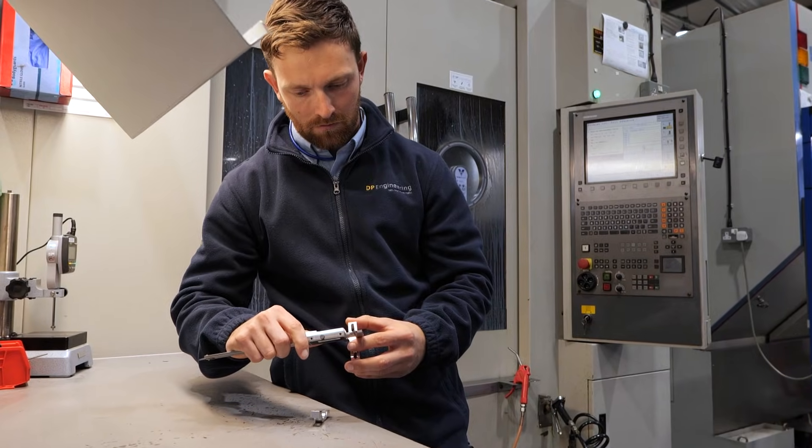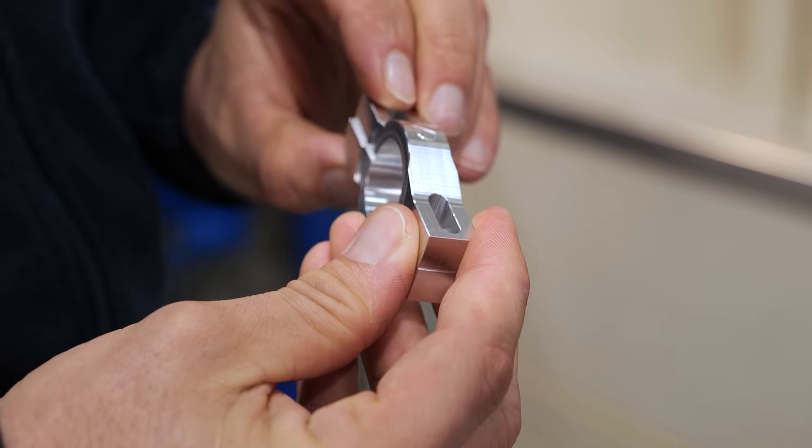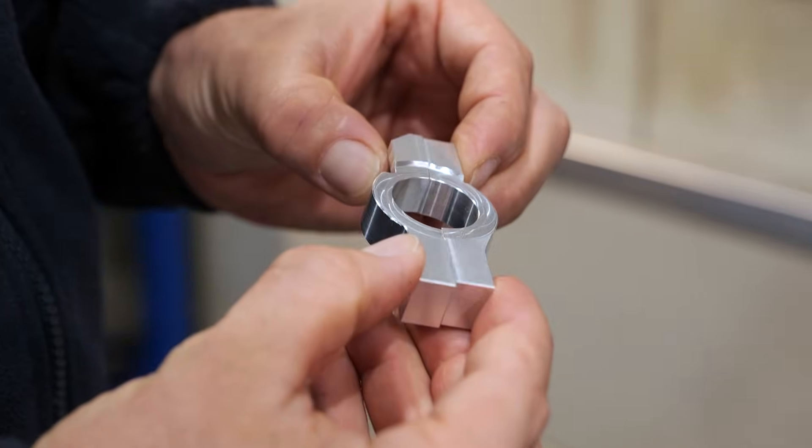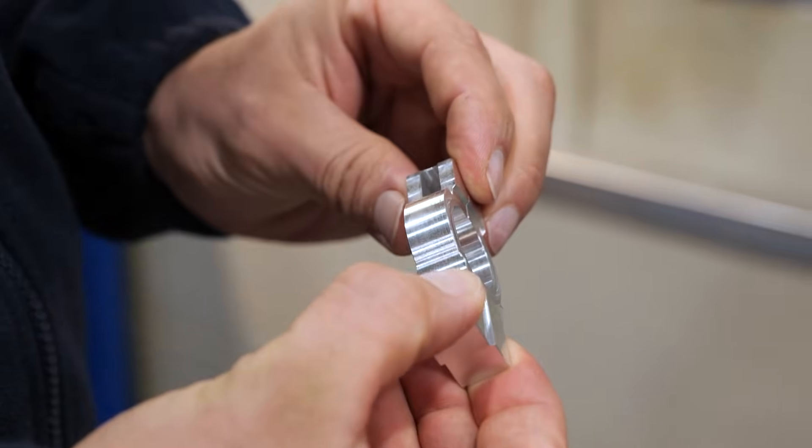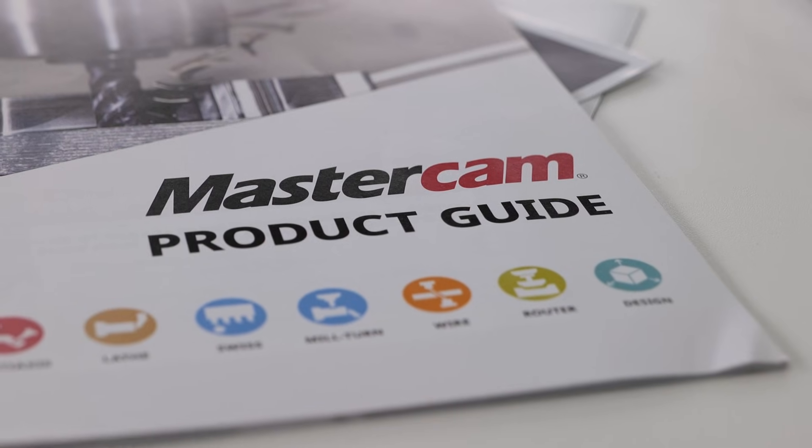A lot of what we do is relatively similar, but it's in very high-end exotics: monels, inconels, things like that, things that are very difficult to machine. That's the majority, especially turning-wise.